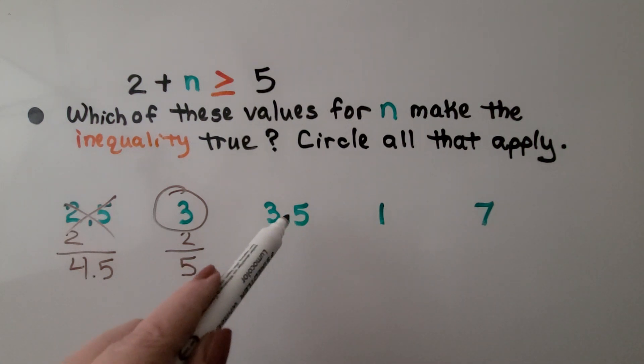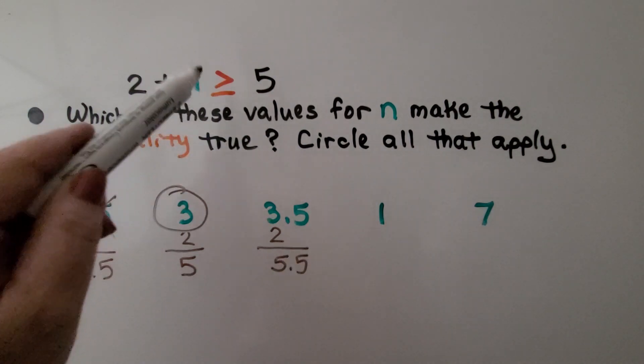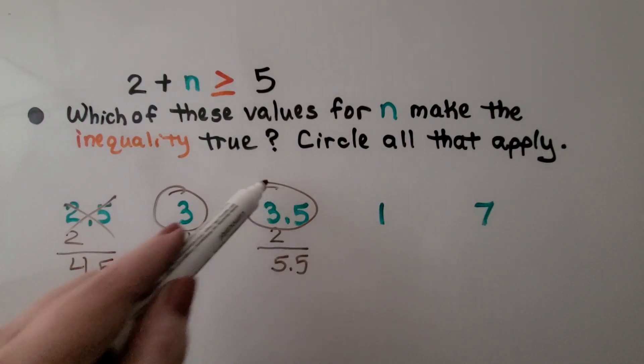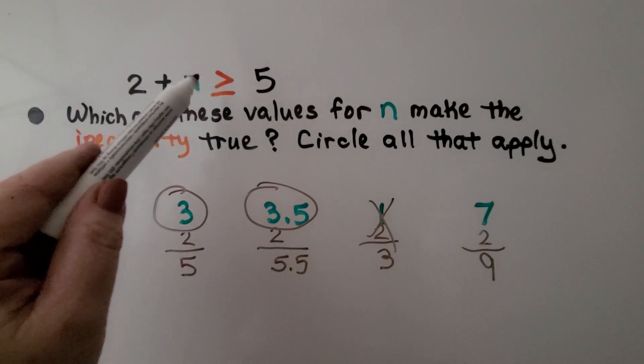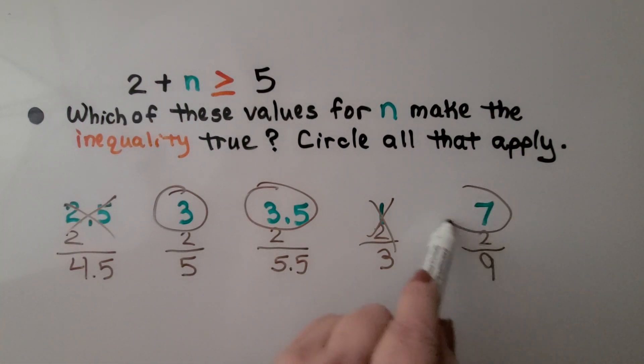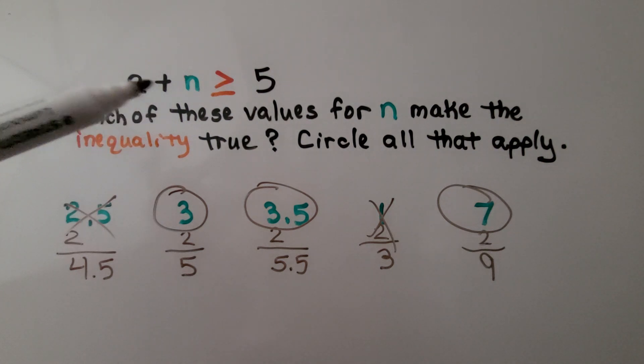If we have three and five tenths, we would add it to the two and get five and five tenths. That's greater than five. So that would be a solution. For one, if we add the two to it, we're only going to have a three. That is not greater than or equal to five. So that's not a solution. If we have seven, we add two to it. That gives us a nine. And nine is greater than five. So that's a solution. We just substitute the value into the inequality and see if it makes the inequality true.